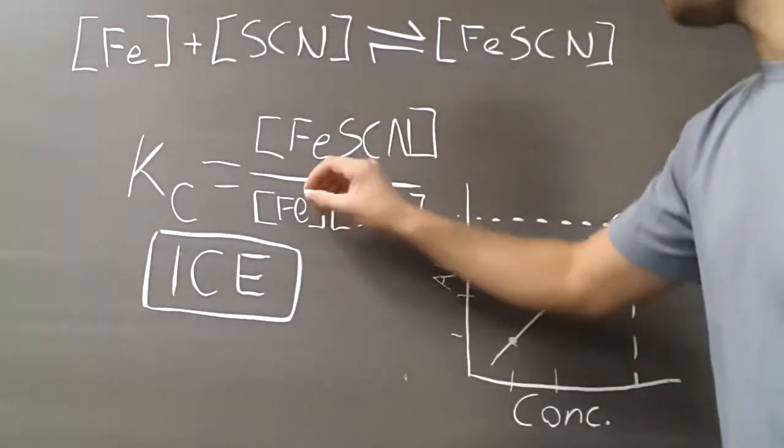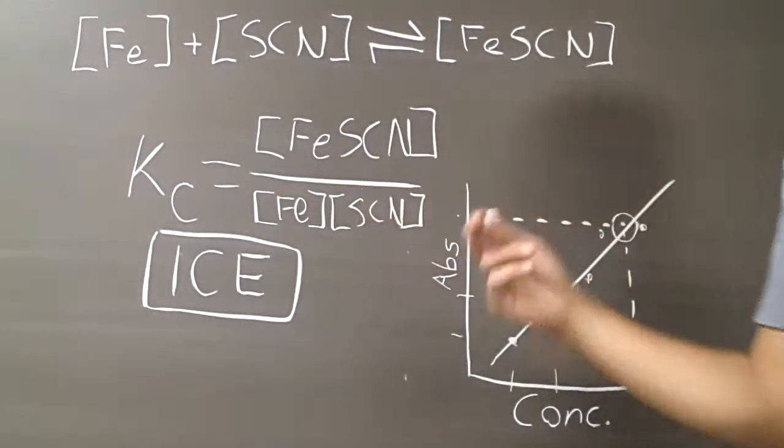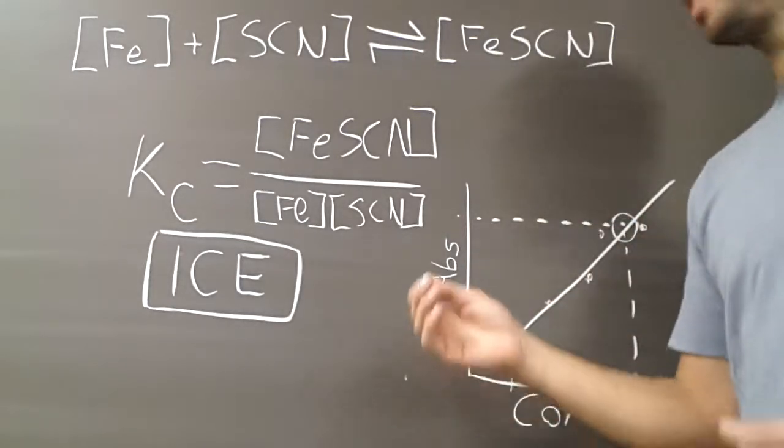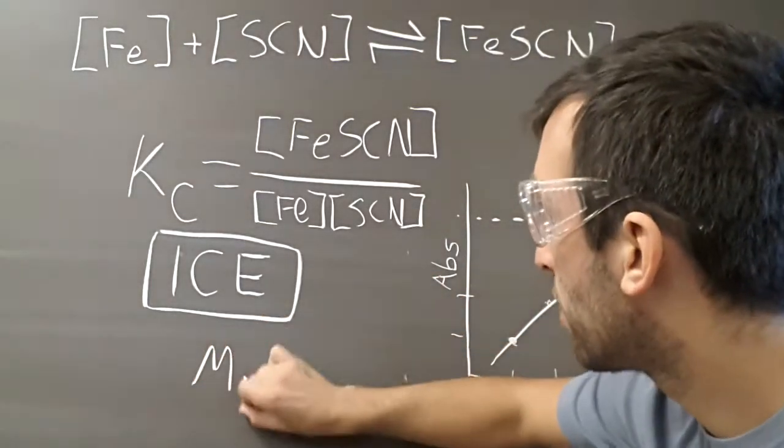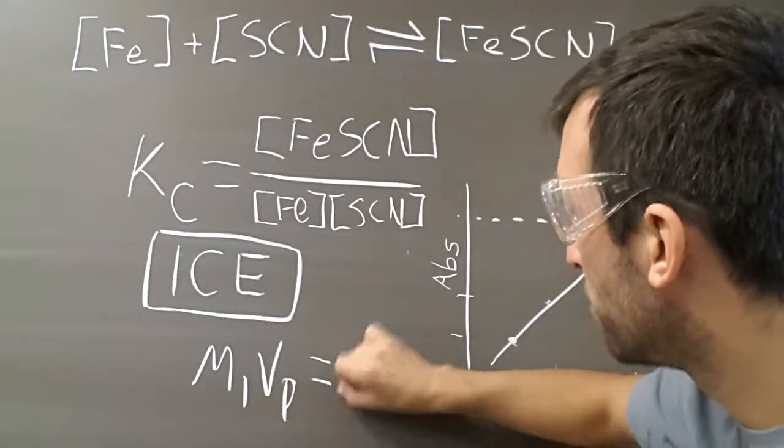So then we can find iron and we can find thiocyanate using M1V1 equals M2V2.